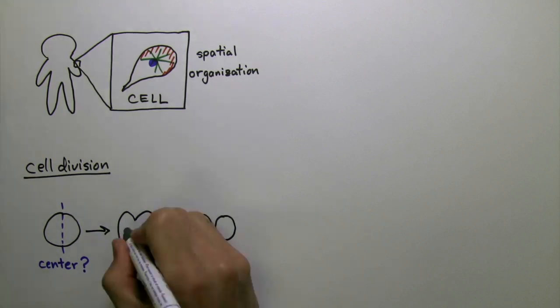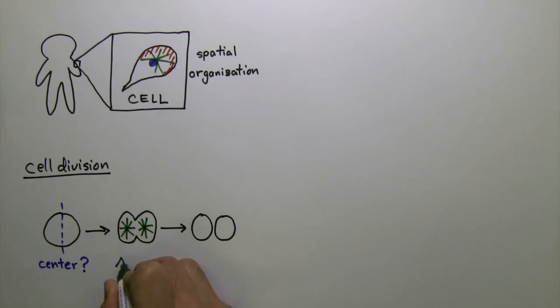Animal cells achieve this by assembling a pair of radial structures called asters. In the textbook model, each aster is made by making microtubules from central points in the cell. Where the two asters meet, the cell divides.